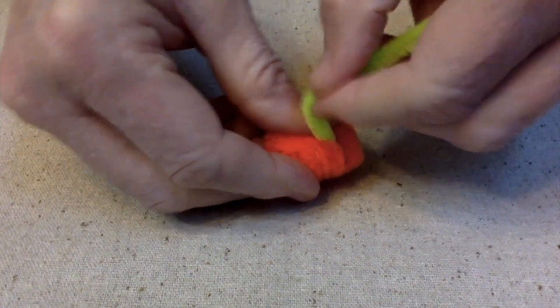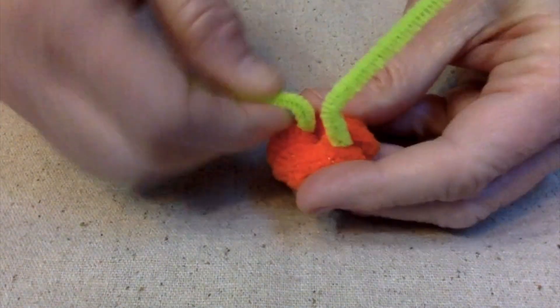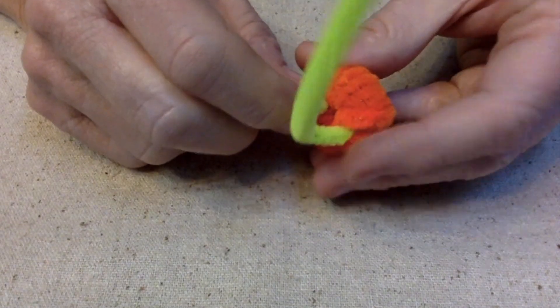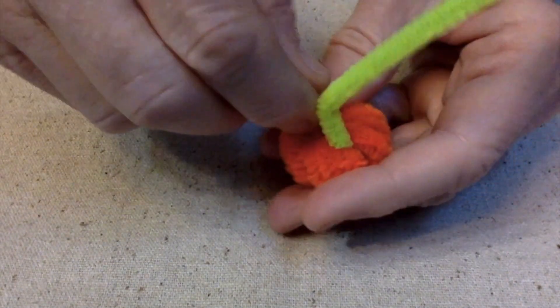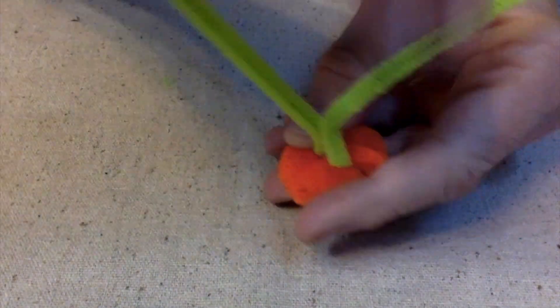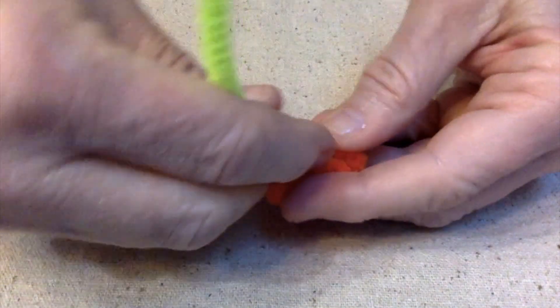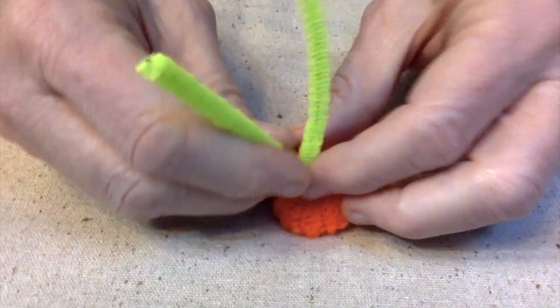So then you just feed the green pipe cleaner up toward the middle there. And this is where you're going to make your leaves.